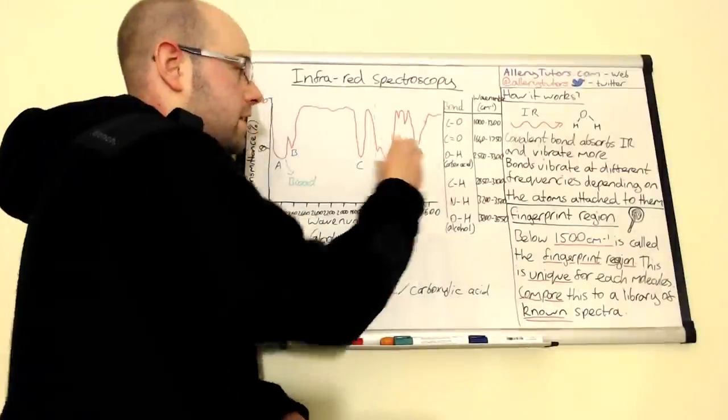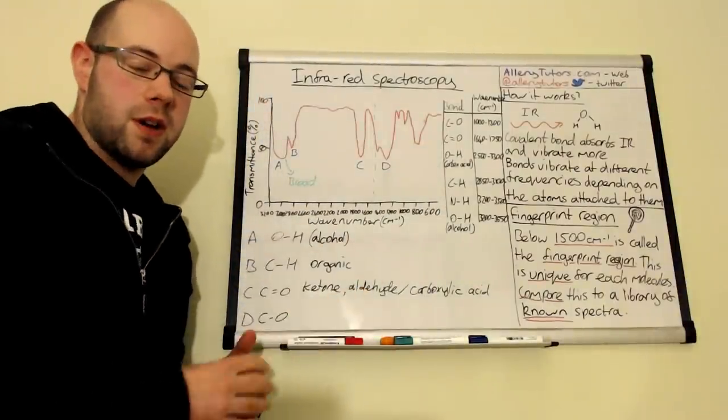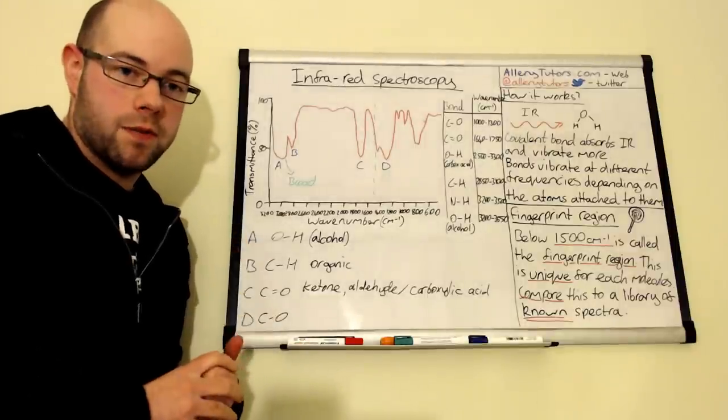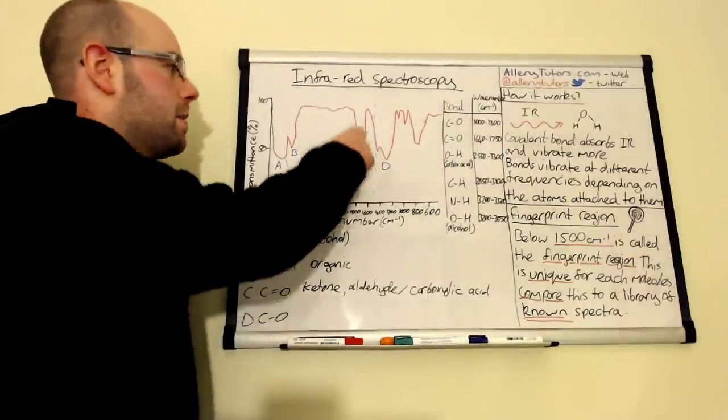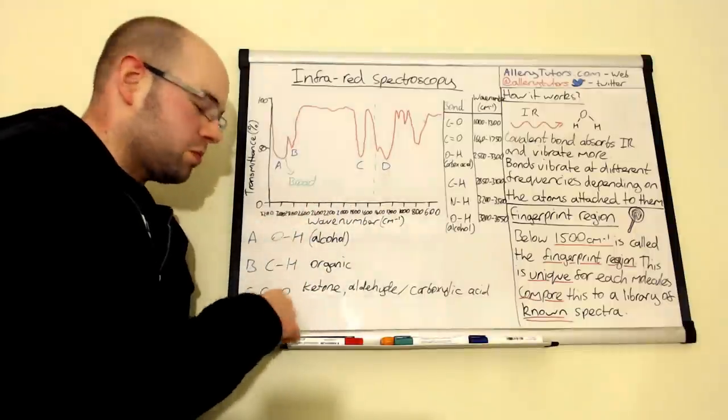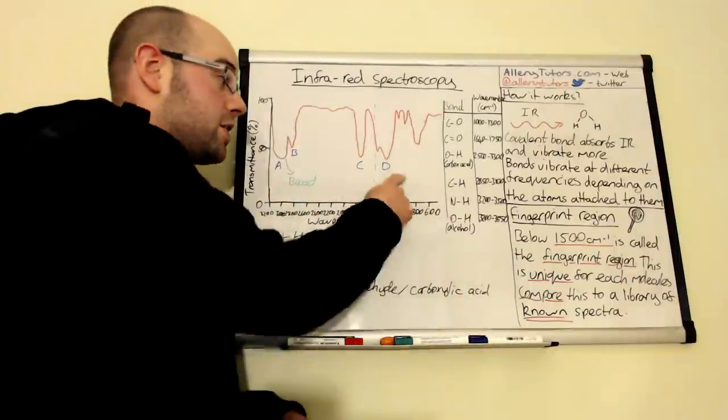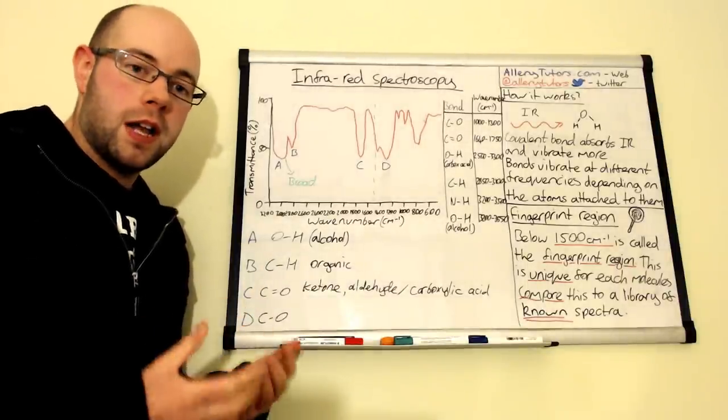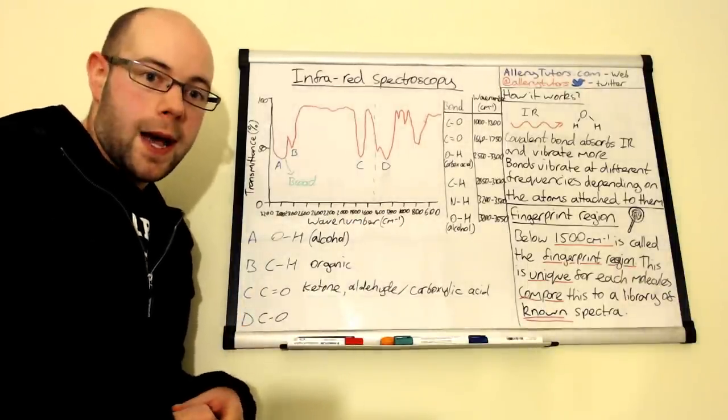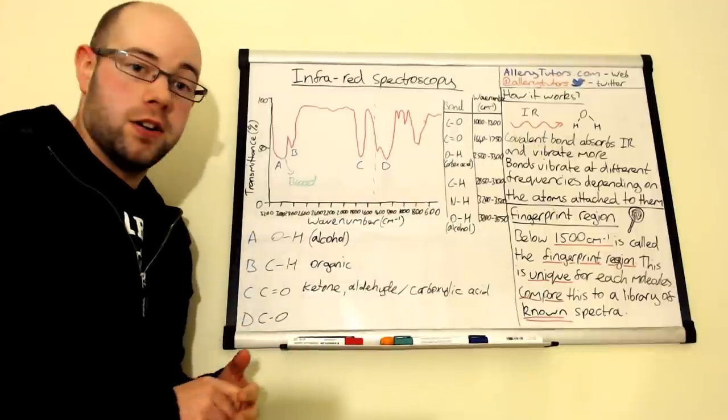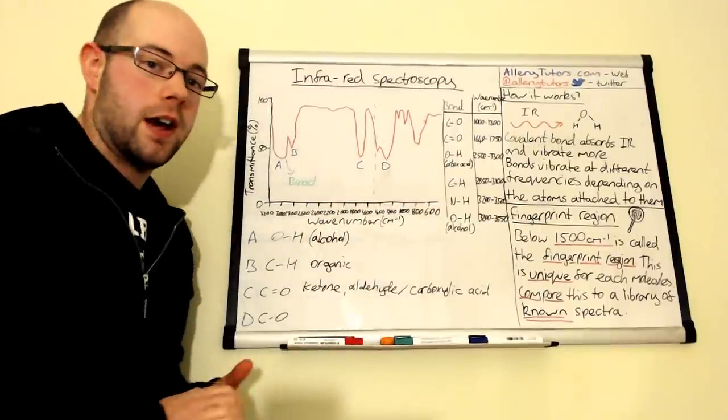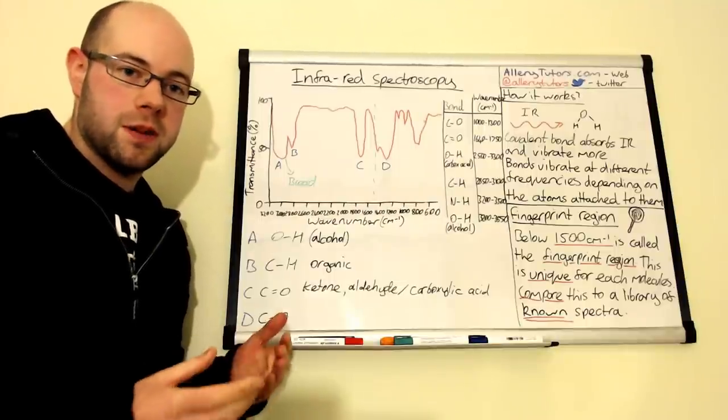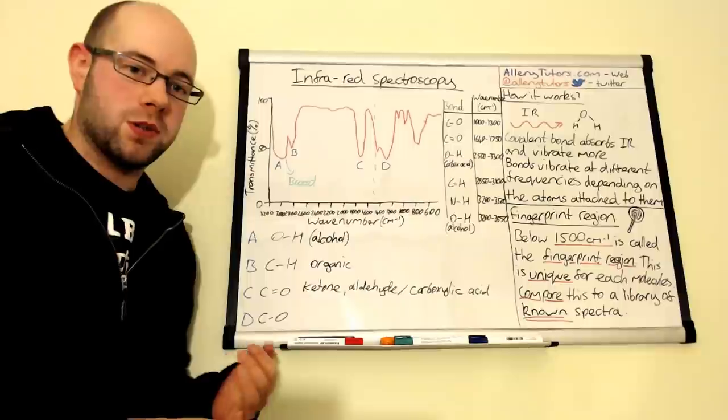So let's say if we take this here and we match it to a known library and there is a match between the two, then we can obviously identify what the molecule is. So even though it might be quite vague here and only tell us what type of bonds we have, it actually can be really powerful if we compare it against the known spectra. But like all types of spectroscopy and spectrometry, analytical techniques are not used in isolation.